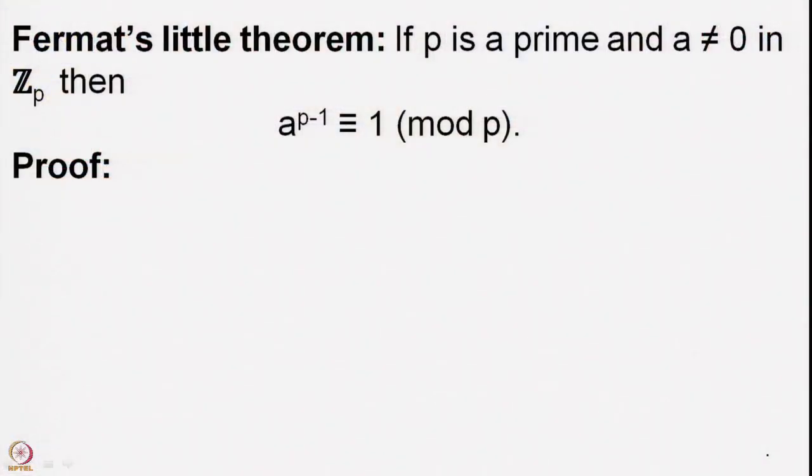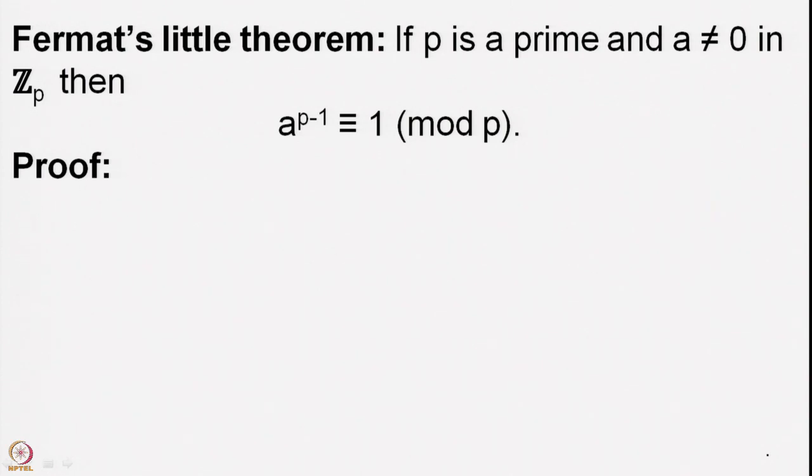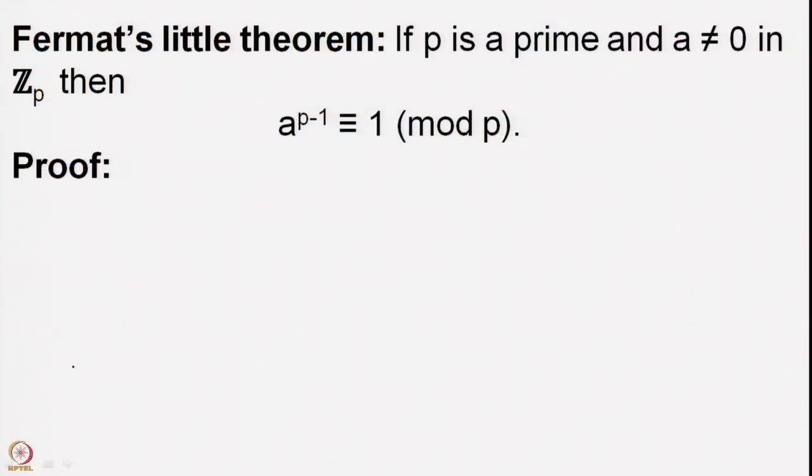Right now I will go ahead and prove one small result called Fermat's Little Theorem, also abbreviated FLT — but this is not the famous Fermat's Last Theorem. What does this theorem say? The theorem says that if you have any nonzero element in Z_p, then raising that element to the power p-1 gives you 1. That is remarkable: take any prime p, compute p-1, and for any nonzero number, a^(p-1) ≡ 1 (mod p).